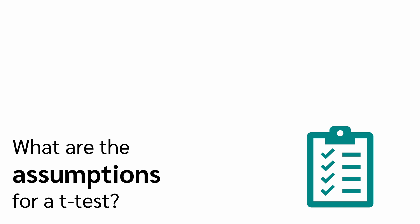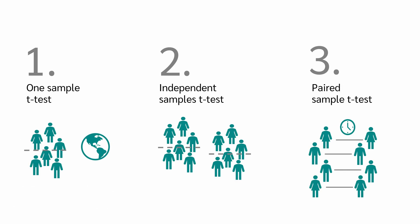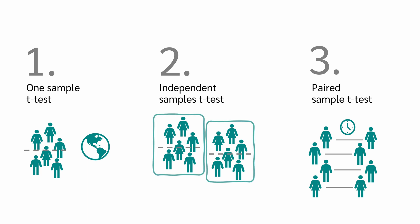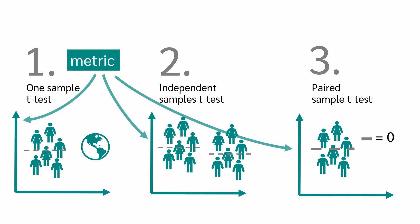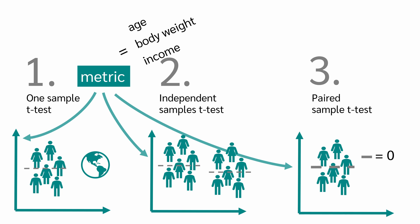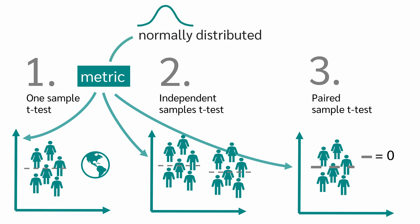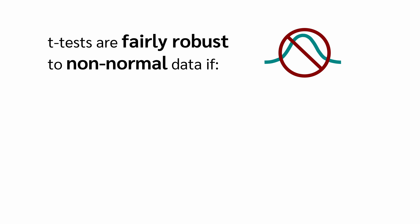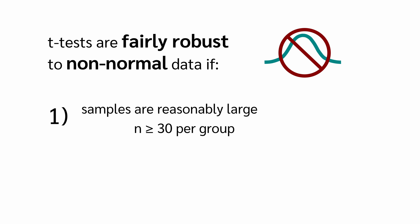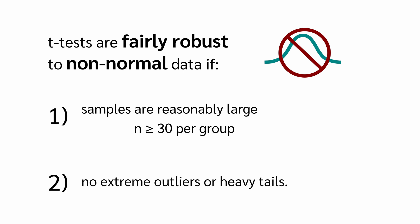But what are the assumptions for a t-test? First, we need a suitable sample. In the one-sample t-test, we need a sample and a reference value. In the independent t-test, we need two independent samples, and in the case of a paired t-test, a paired sample. The variable we are testing must be metric — examples include age, weight, and income. A person's level of education, for instance, would be ordinal, not metric. In addition, the metric variable must be normally distributed in all three test variants. However, t-tests are fairly robust to non-normal data if samples are reasonably large and if there are no extreme outliers or heavy tails.